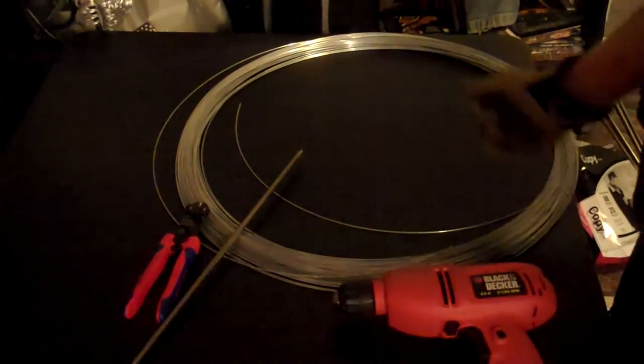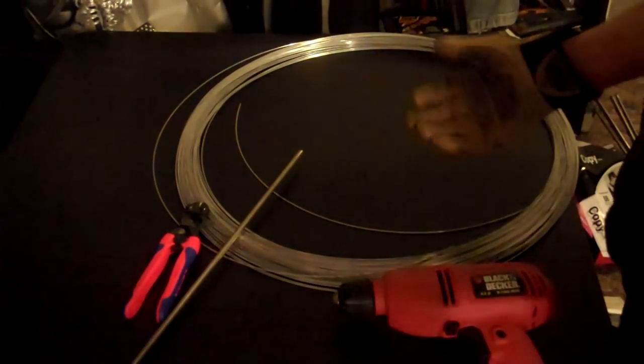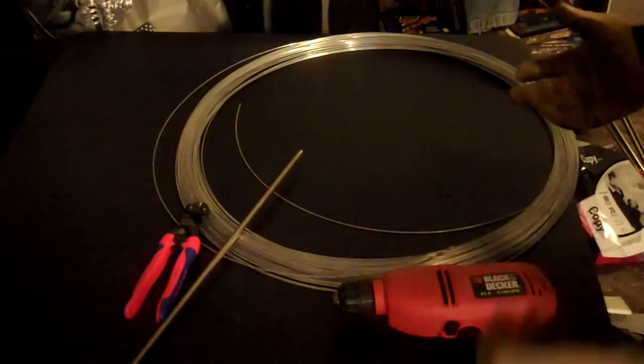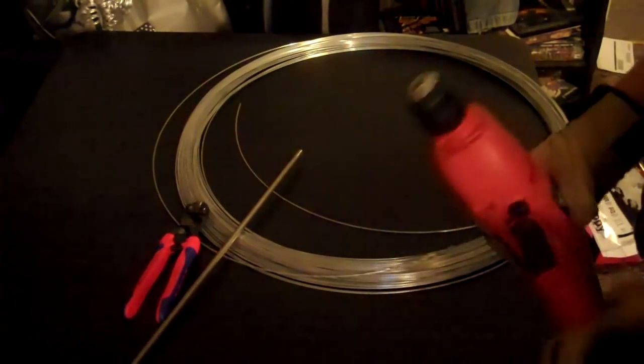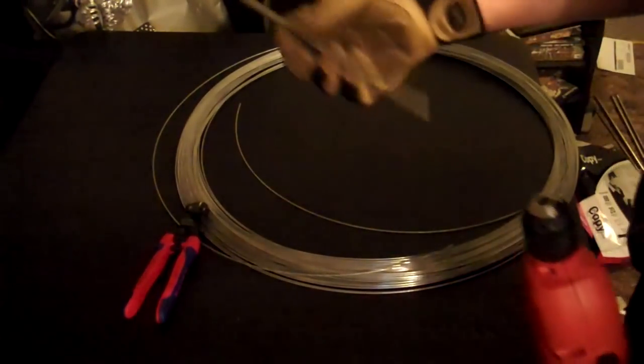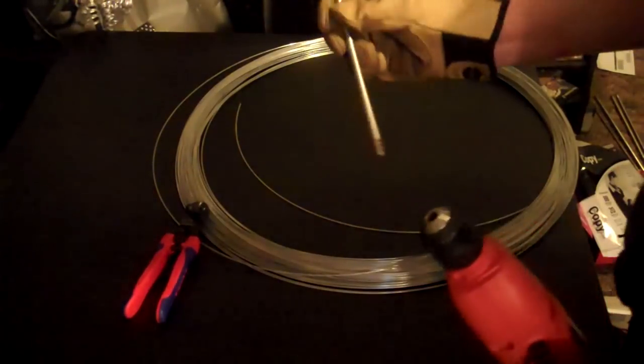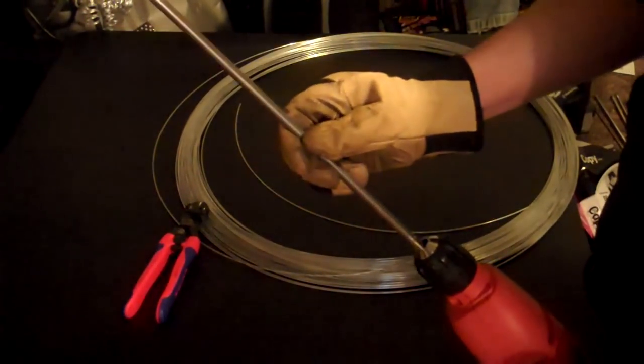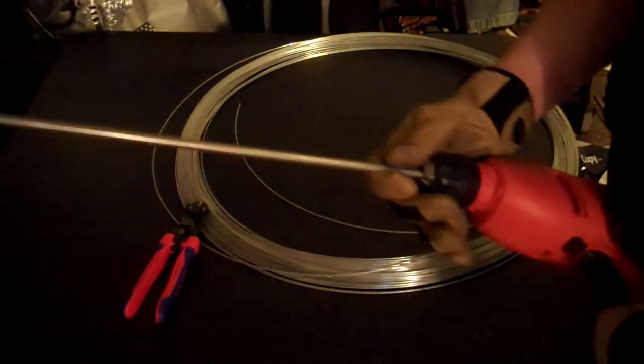So right now, what I'm going to do is I'm going to spin a coil of wire. The first thing I need to do is put my mandrel in my drill. So right now, I got out my 5/16ths of an inch mandrel. I'm just going to stick it in there, like so.